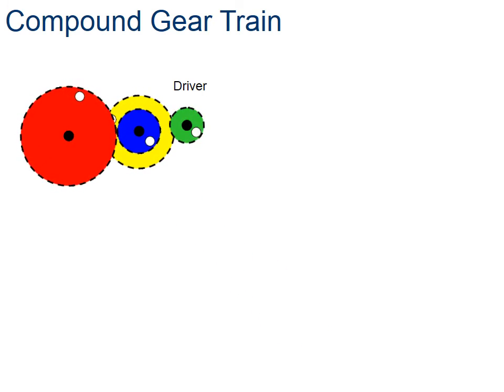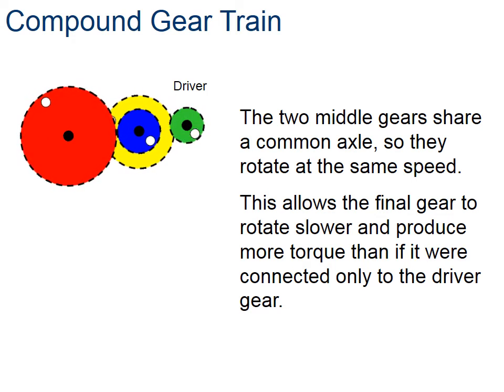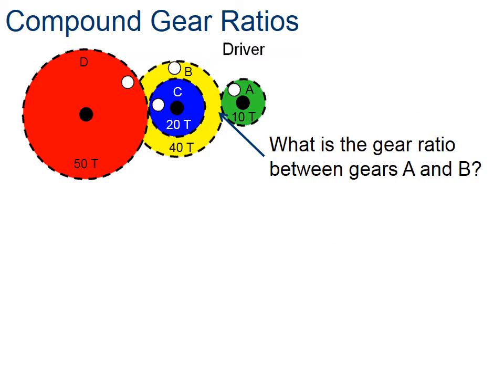So we've put our 4 gears together in our gear train. And I had mentioned, and it says here on the slide, that the 2 middle gears operate at the same speed or the same rotation. And so what does this do for us? It basically allows that red gear to produce a lot more torque than if we were to put this in a simple gear train.